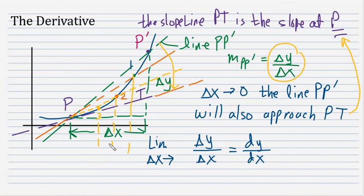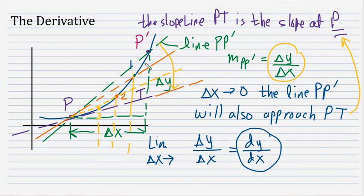As delta X lessens and approaches 0, I will now get the derivative of this curve. So the general formula of the derivative is simply the limit of delta Y over delta X as delta X approaches 0.